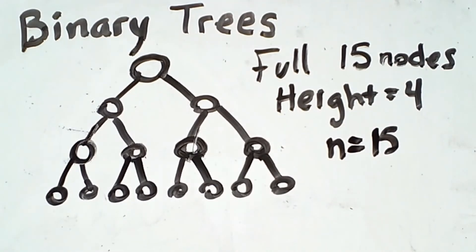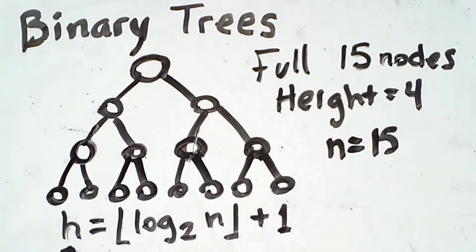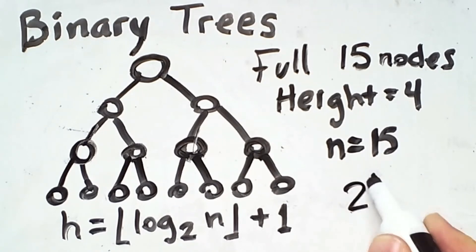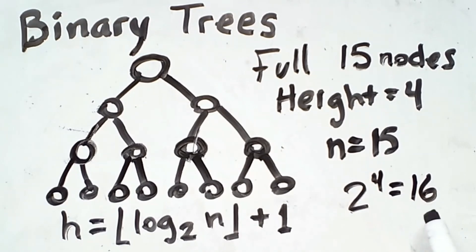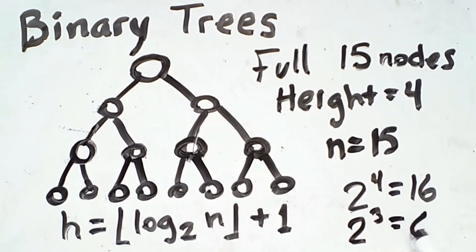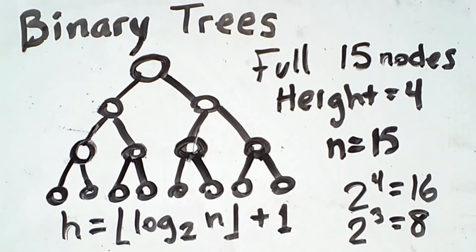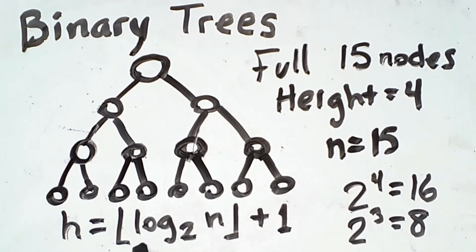So what is the exact formula? This formula says the height h equals the floor, that just means round the number down, of log base 2 of n, where n is the number of nodes, plus 1. So how do we compute this quantity here? Well, we know that if n were 16, that because 2 to the 4 is 16, and we also know that 2 to the 3 is 8. So essentially, any number of nodes that is less than 16, but greater than or equal to 8, will have a value of 3 when we compute the floor of log base 2 of n. Let me write out a table to kind of show you how this works.